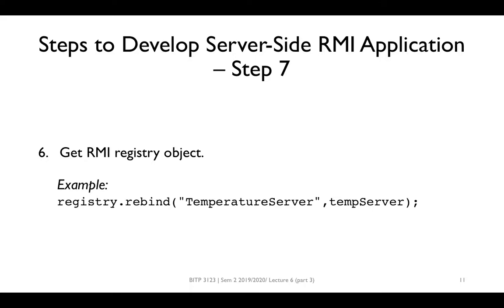Finally, in step 7, we need to register the object interface in the registry using the rebind method. For example, we call registry.rebind, specifying the object interface name as a string and the object itself — in this case, TemperatureServer and the object TemServer.